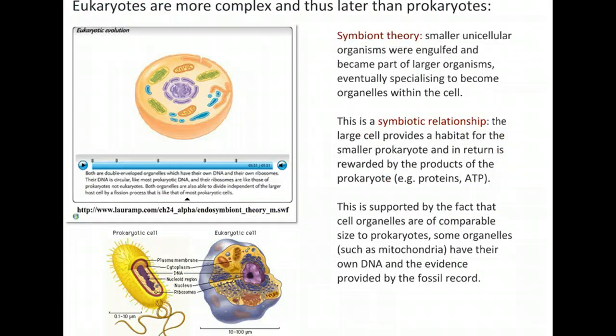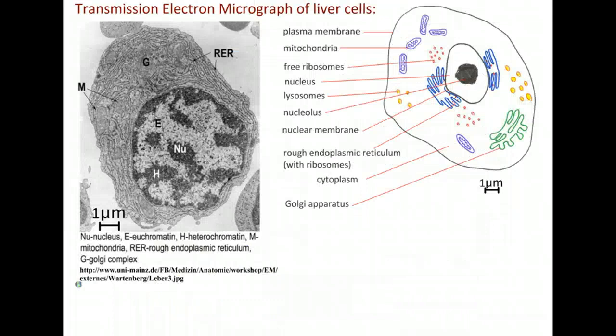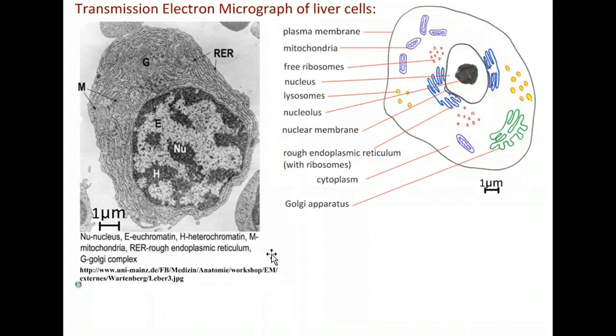Eukaryotes are more complex, and so we infer that they came later than prokaryotes. Here's the symbiont theory, also known as the endosymbiotic theory — a couple of resources here, but we've already talked about this in class, so I'm just providing extra resources as a reminder of what you should have in your notebook. Here is the electron micrograph of a liver cell. It is very detailed, but it's hard to identify each component, especially if you don't see these very often.